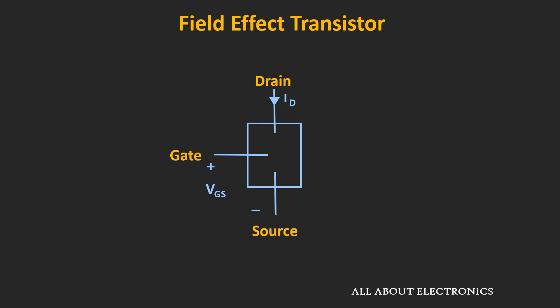Now in the previous video, we have seen that in case of a field effect transistor, the path through which the charge carrier flows is known as the channel. And if this channel is made up of N-type material, then the field effect transistor is known as the N-channel FET. Likewise, if the channel is made up of P-type semiconductor material, then it is known as the P-channel FET.